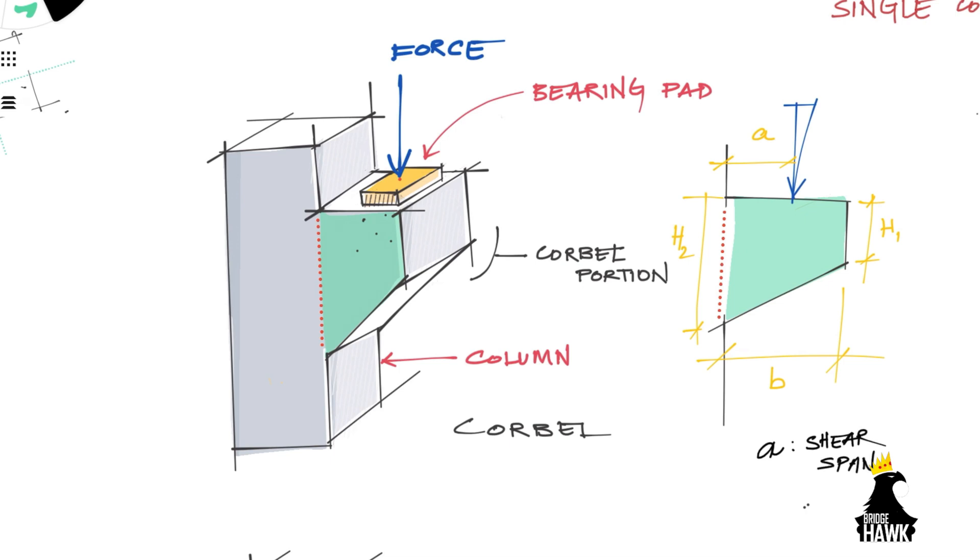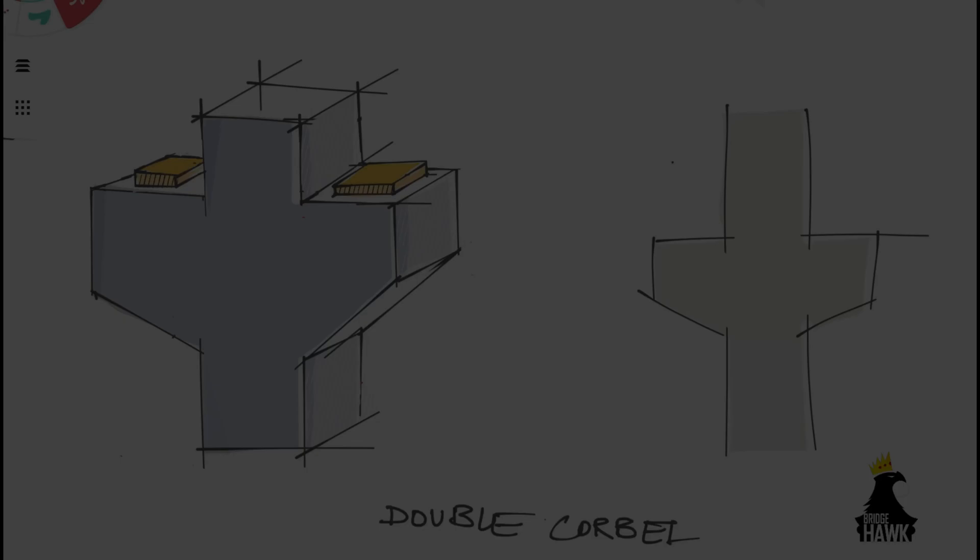The geometry of the corbel in its section is gradually increasing towards the column. This is to counter the increasing moment towards the end of the corbel.